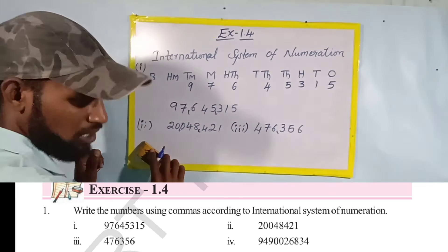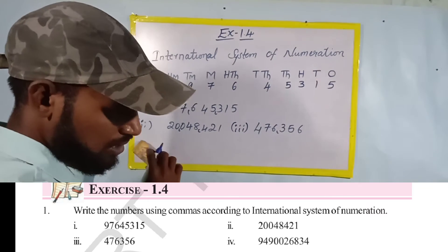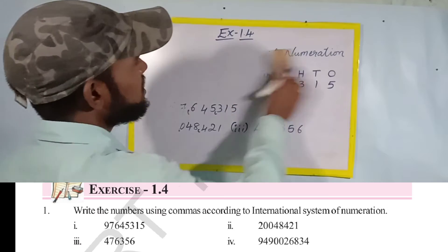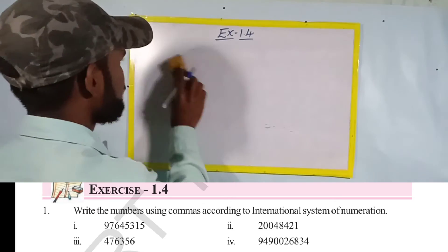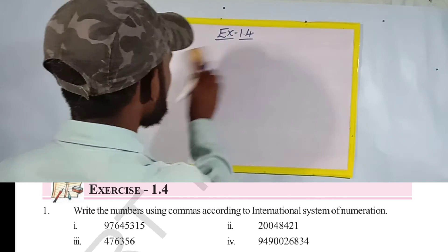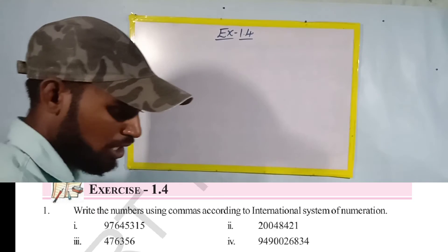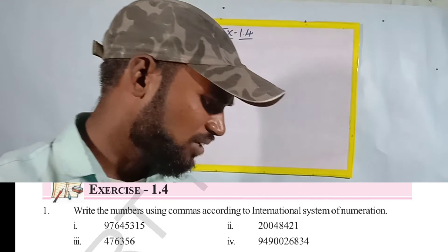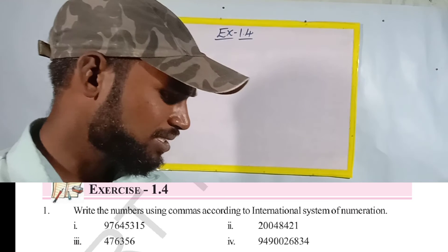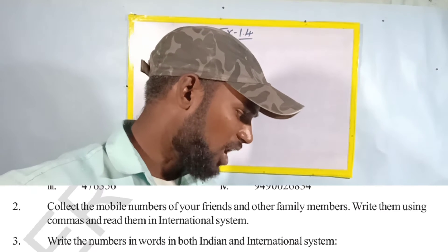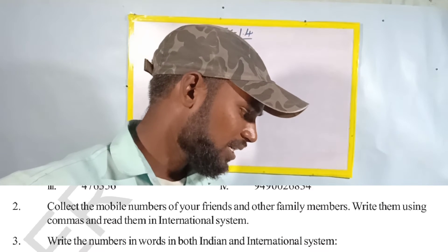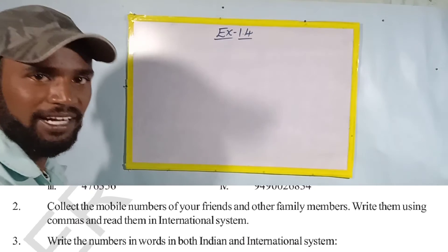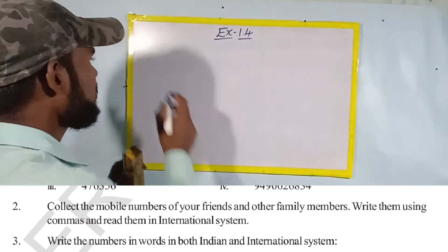Now what is the next bit given? Collect the mobile number of your friends and family members, write them using commas, and read them in the international system. For example, let me take my own mobile number.